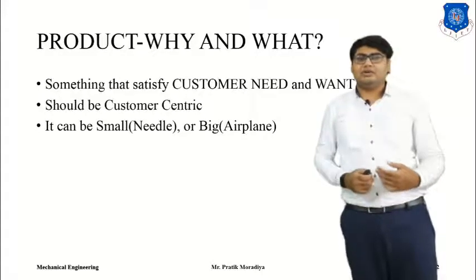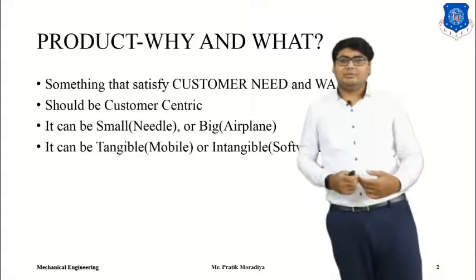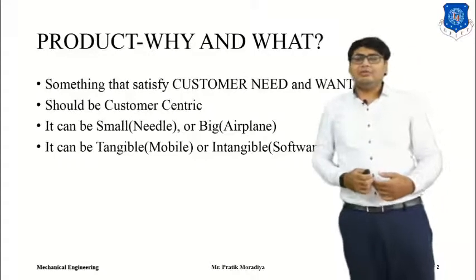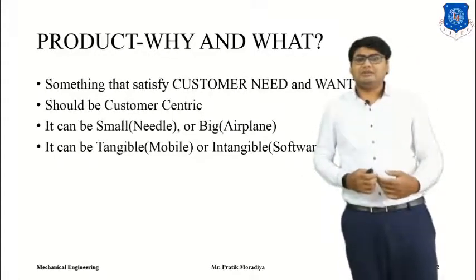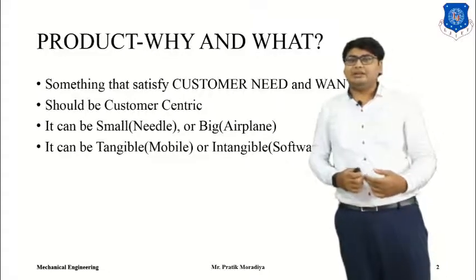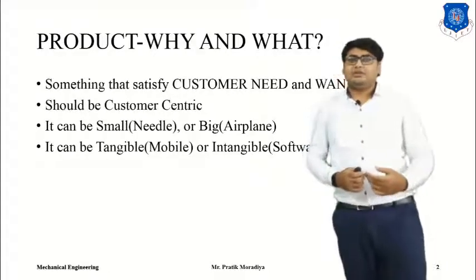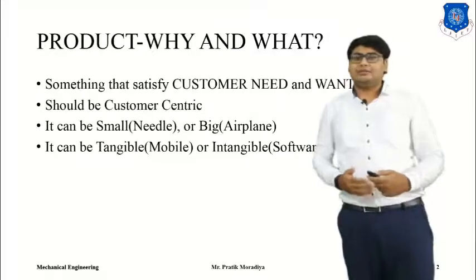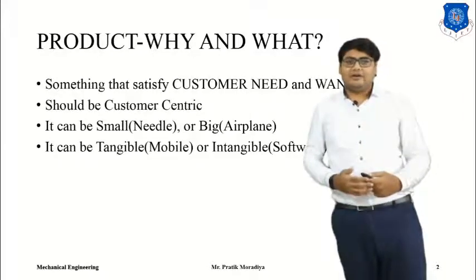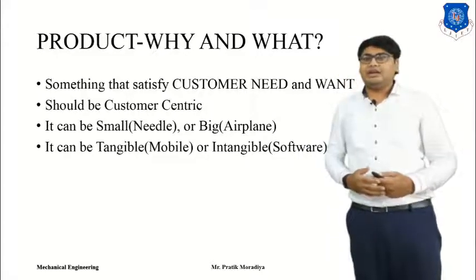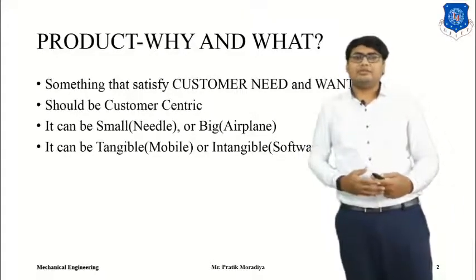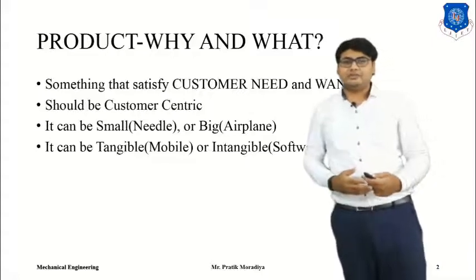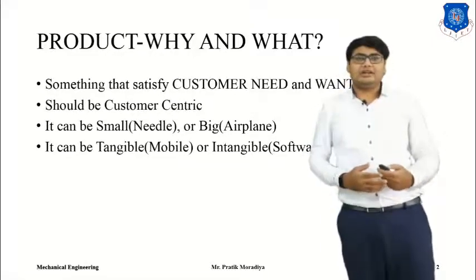A product need not be only tangible — it can also be intangible. Tangible is something that we can feel and see, whereas intangible is something we cannot touch or see. For example, a mobile phone is a tangible product because we can hold it in our hands and feel it. On the other hand, application software is an intangible product — we cannot see software, but it is there and satisfies our needs.